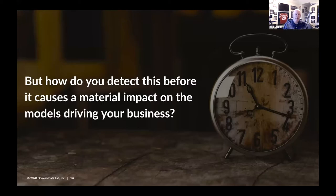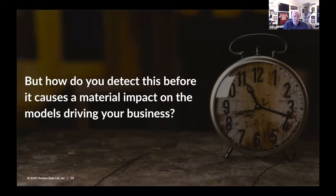These things are constantly changing — life around us is happening, and this is no more apparent than in today's world where models built using data from 2018, 2019, and even January or February of this year may not be good indicators of what decisions you should be making here in July 2020. But it's not always that clear-cut, as models and data change every day. How do you detect these small, tiny changes before they have a material impact on the models your business really relies on?